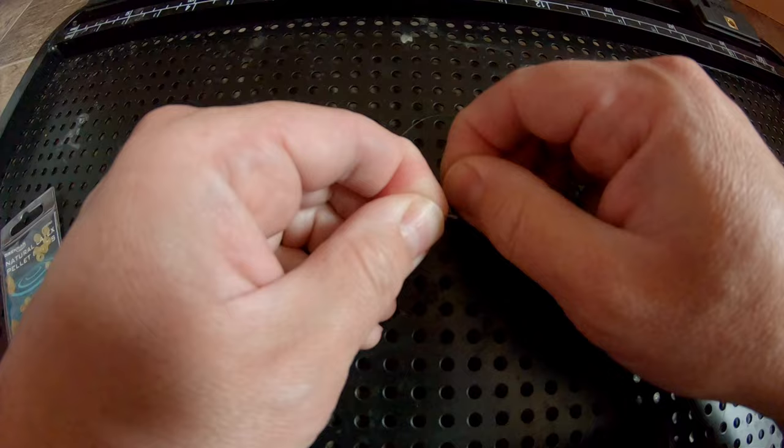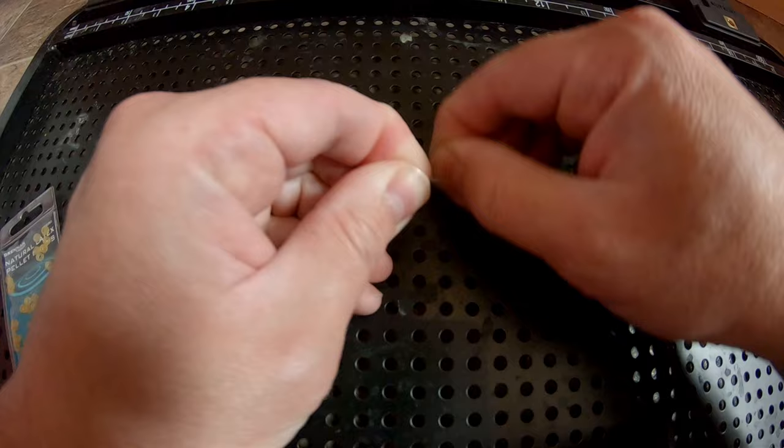Now whip the line down the shank of the hook a number of times. Lucky for some, we're going for 13. It takes a little bit of care to do this properly so just take your time.